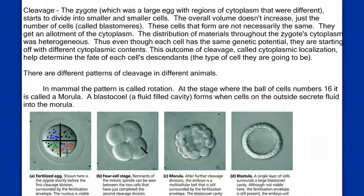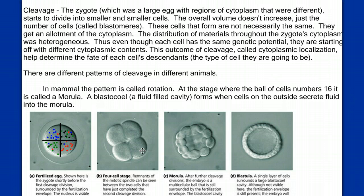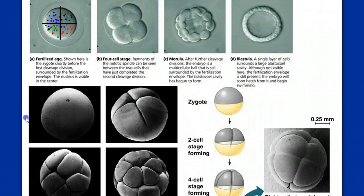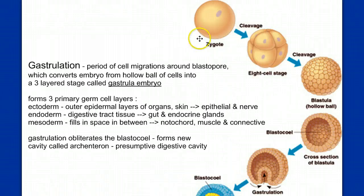Ultimately, where a cell was located in the original three-dimensional cell determines its fate down the road. From the very first division, we're sending cells down a line of fate in terms of determining what they will eventually become. During the cleavage stage, the overall volume doesn't change but the number of cells greatly increases, resulting in many smaller cells. This takes us eventually to a hollow ball of cells called the blastula.